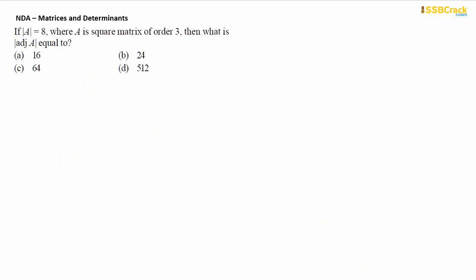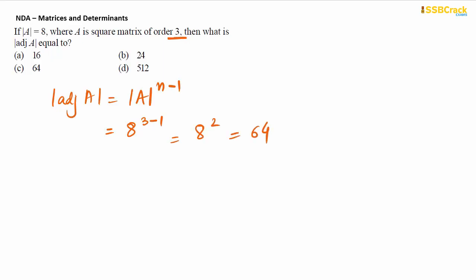Next question: If determinant of A equals 8, where A is a square matrix of order 3, what is the determinant of adjoint of A? Options: 16, 24, 64, or 512. The formula is: det(adj A) = det(A)^(n−1). Here det(A) = 8, n = 3, so det(adj A) = 8^(3−1) = 8² = 64. Option C is correct. If your concepts are weak, join the matrices and determinants lecture series.